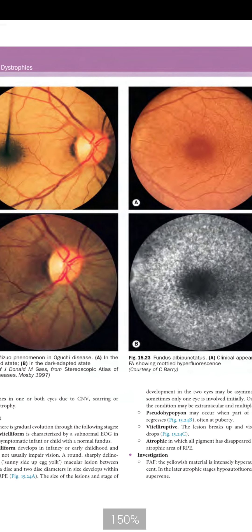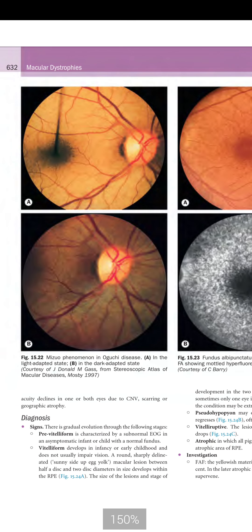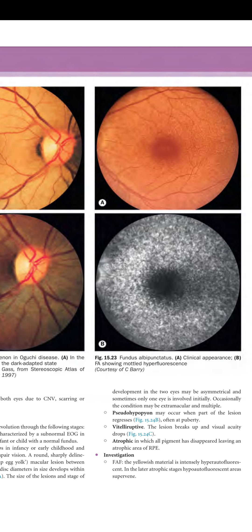Figure 12.22 shows the Mizuo-Nakamura phenomenon in Oguchi disease: a golden-brown fundus in the light-adapted state becoming normal in the dark-adapted state. Fundus albipunctatus shows multiple yellowish-white spots on clinical appearance, and FA showing a mottled pattern of fluorescence.